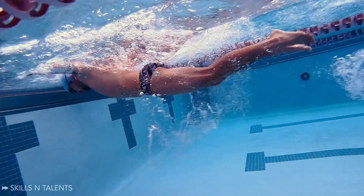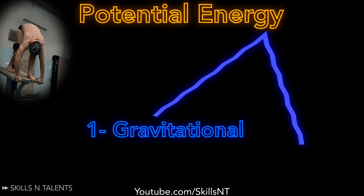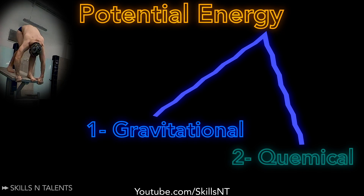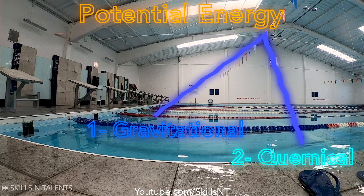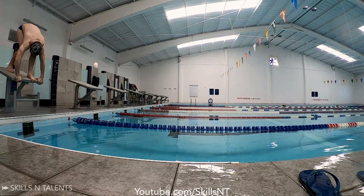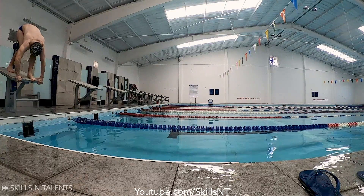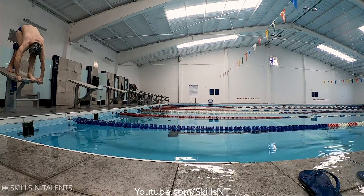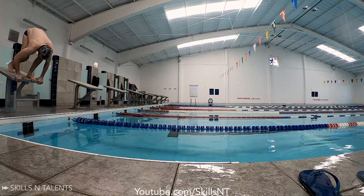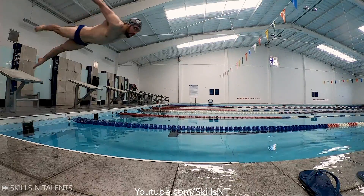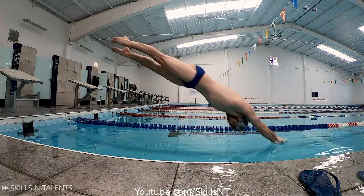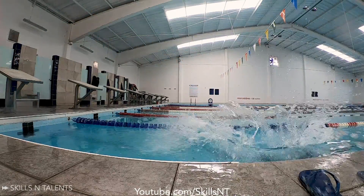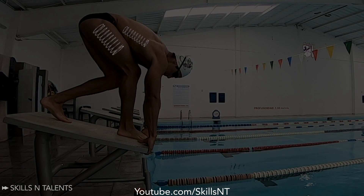The second kind of potential energy you have on the blocks is chemical potential energy. Muscles act like springs, so the chemical potential energy of muscles is converted by muscles applying a force into kinetic energy of motion.